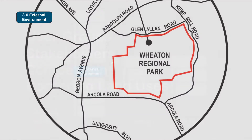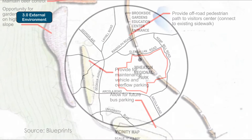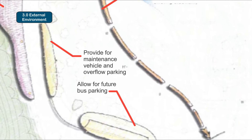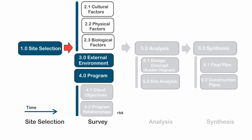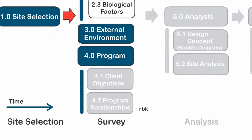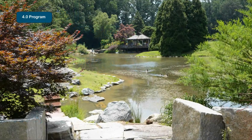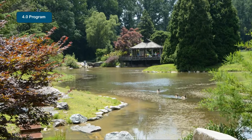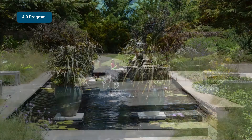Brookside Gardens borders Wheaton Regional Park, which essentially extends its forested area. Since school groups are a potential user group, parking needs to accommodate buses. The development of the site or facility is program-driven. Program is determined by the client's or agency's objectives and mission. In park and natural areas, the program's physical and biological features bubble up to determine programming opportunities.